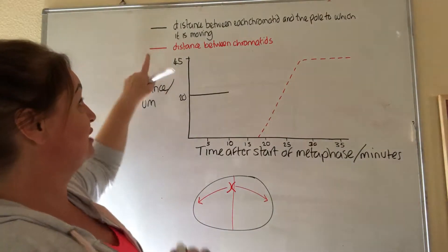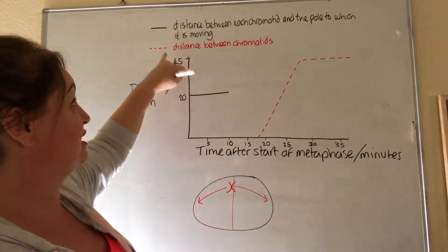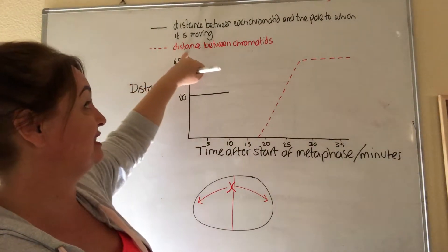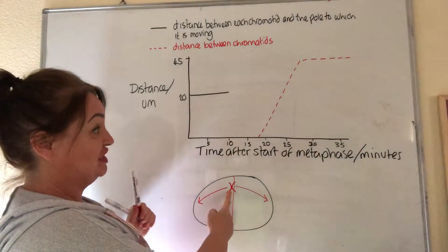We've got two lines. This should be a dotted one. This one here is the distance between the chromatids. So clearly here, when it's on the equator of the cell,